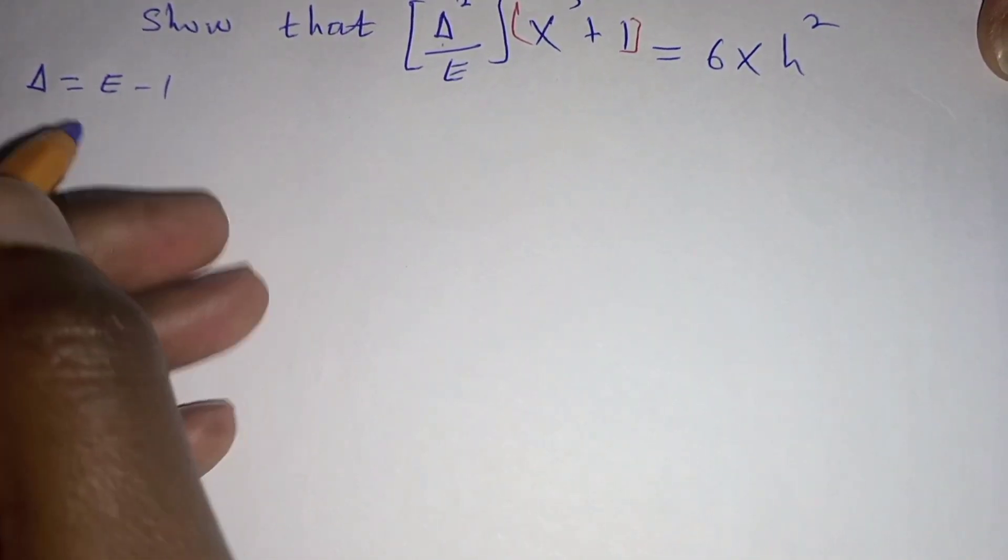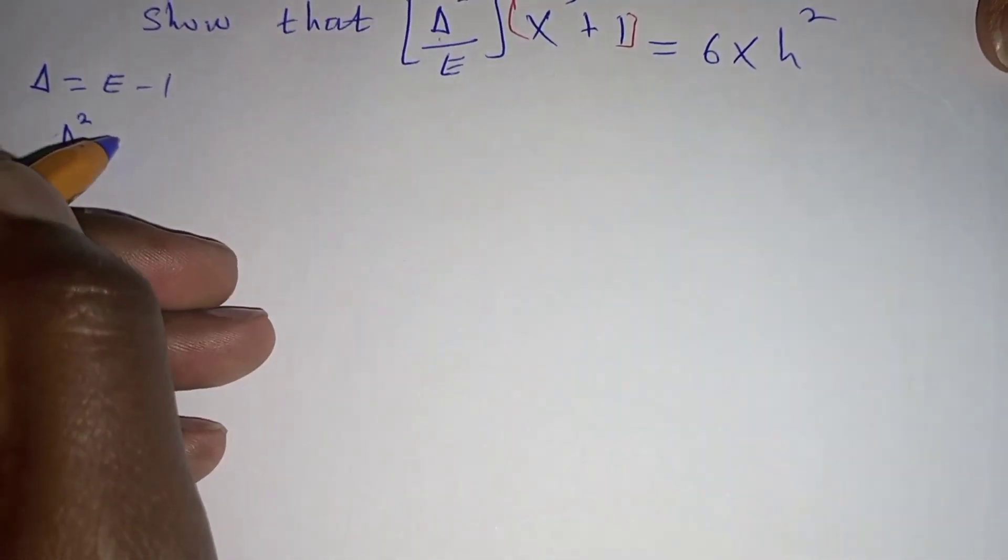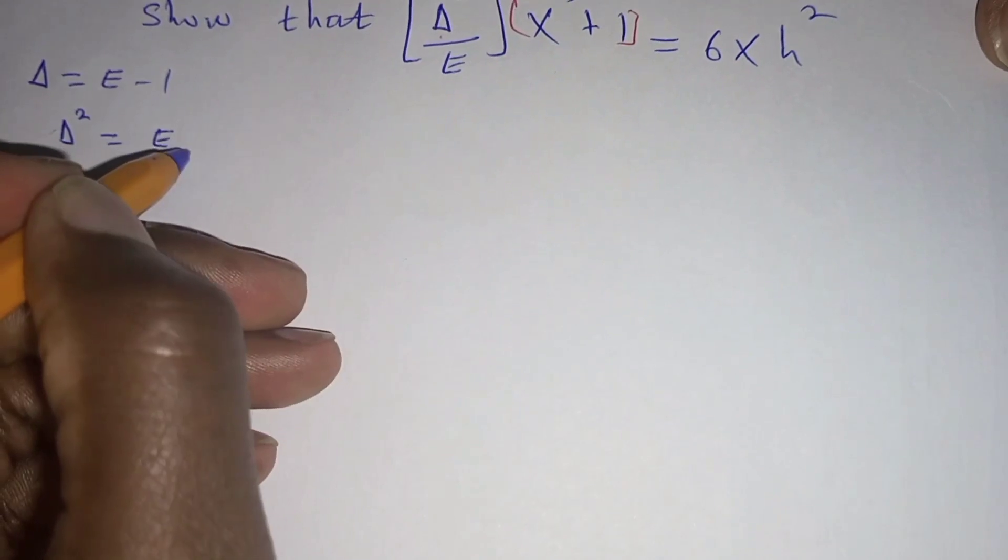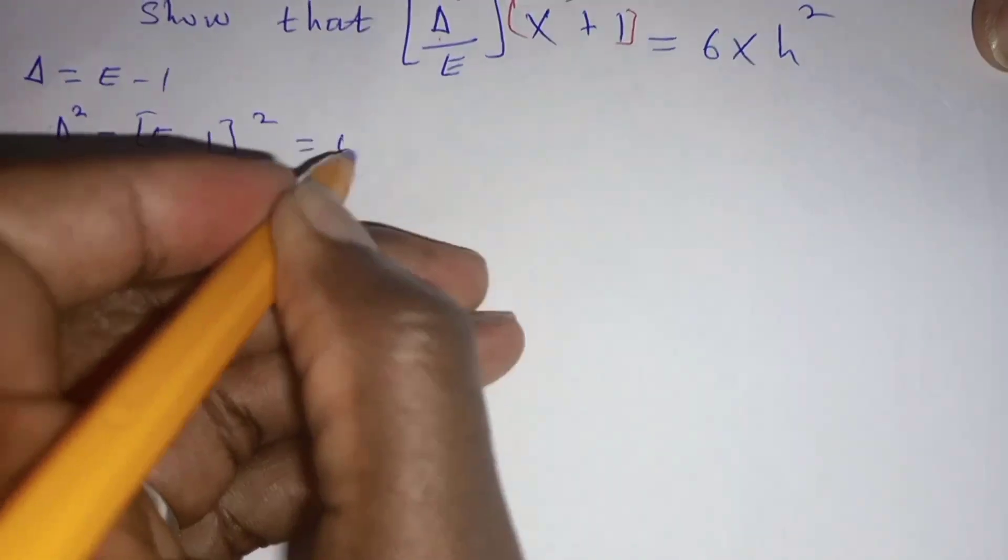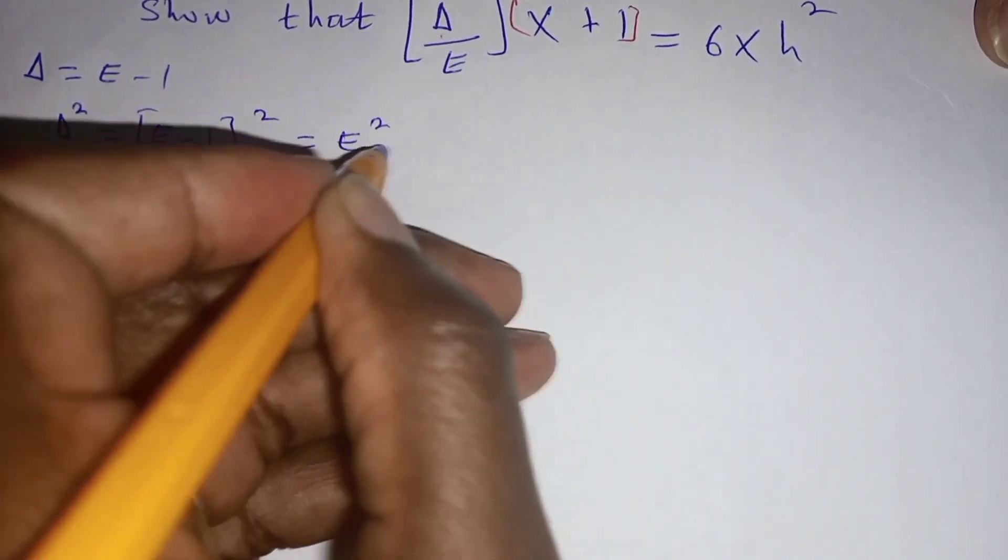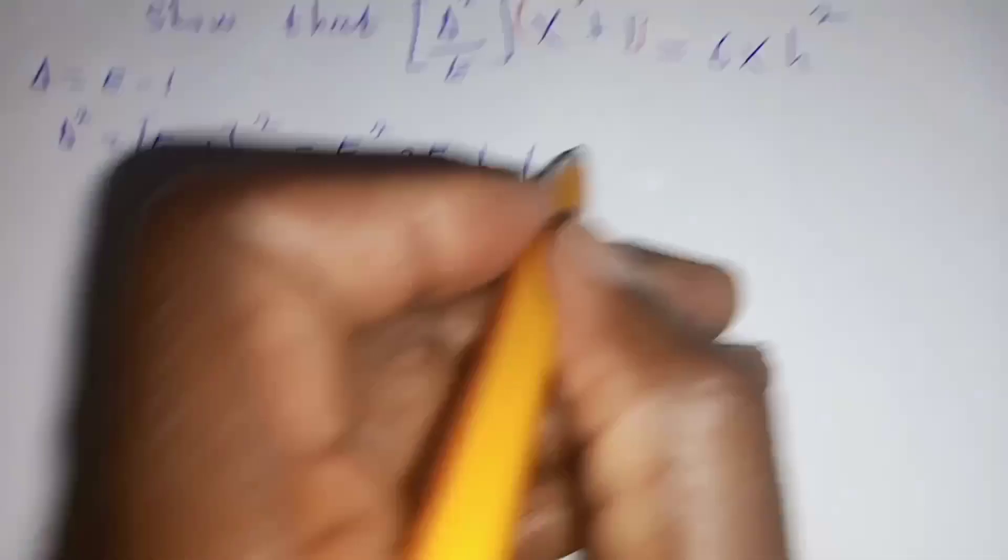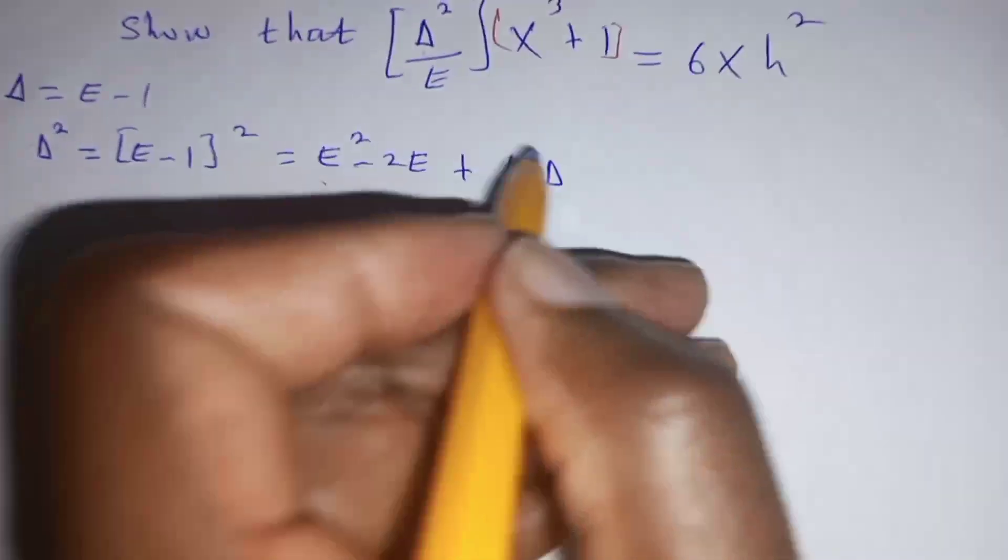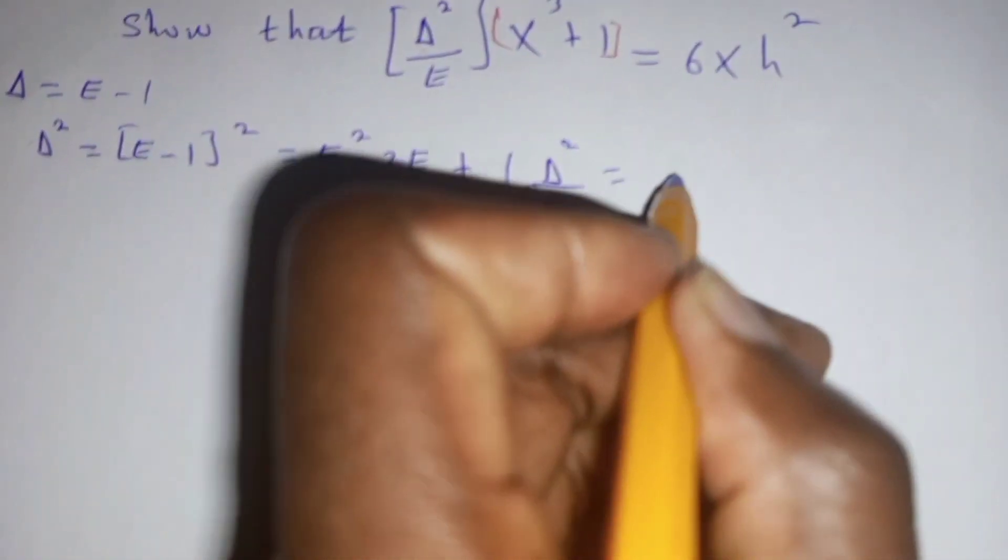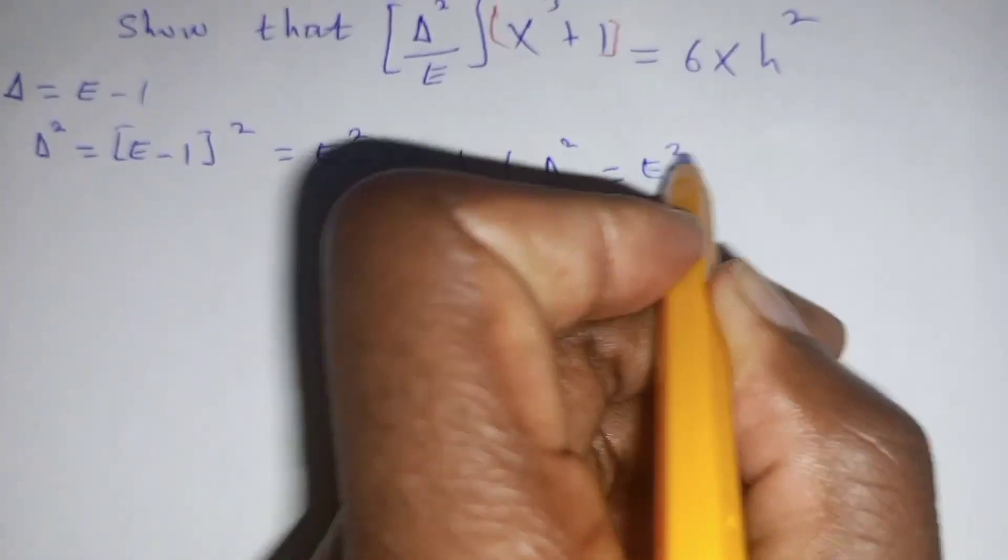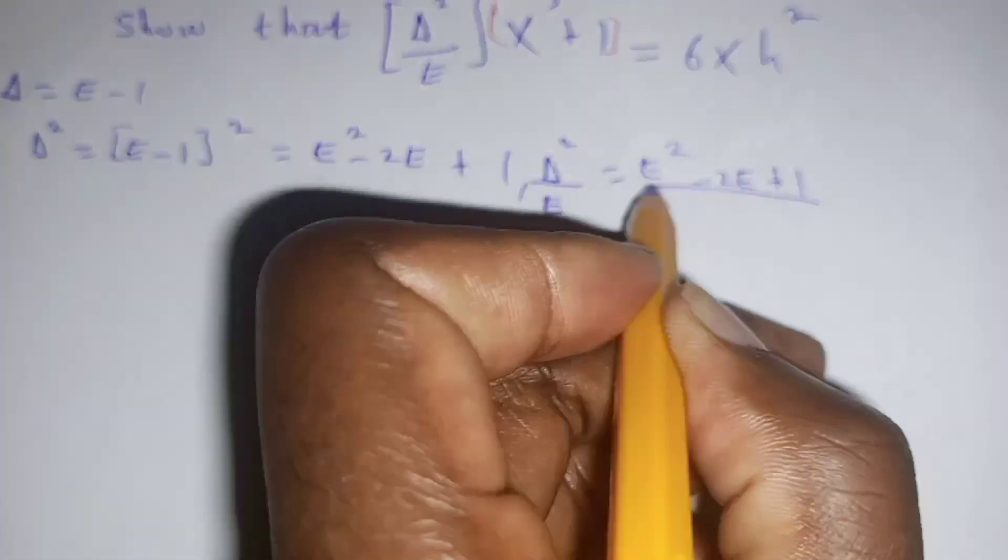So, we are going to have this shift operator being equal to E minus 1 squared, which is equal to shift operator squared minus 2E, then plus 1. So, shift operator squared over E is equal to shift operator squared minus 2E plus 1 over E.